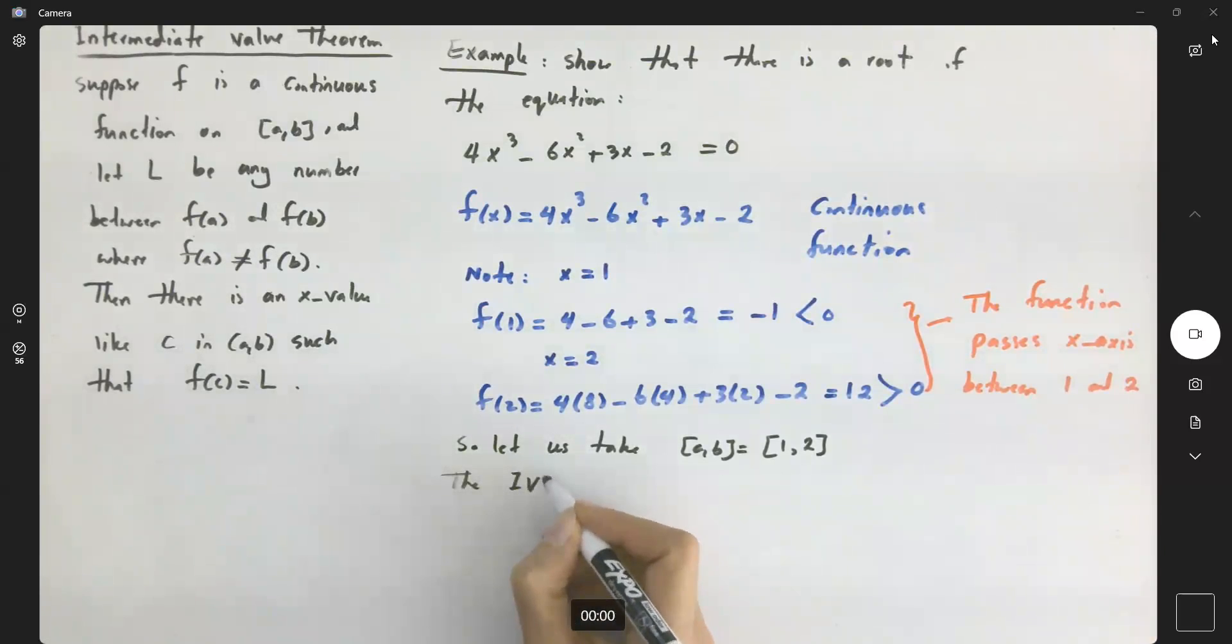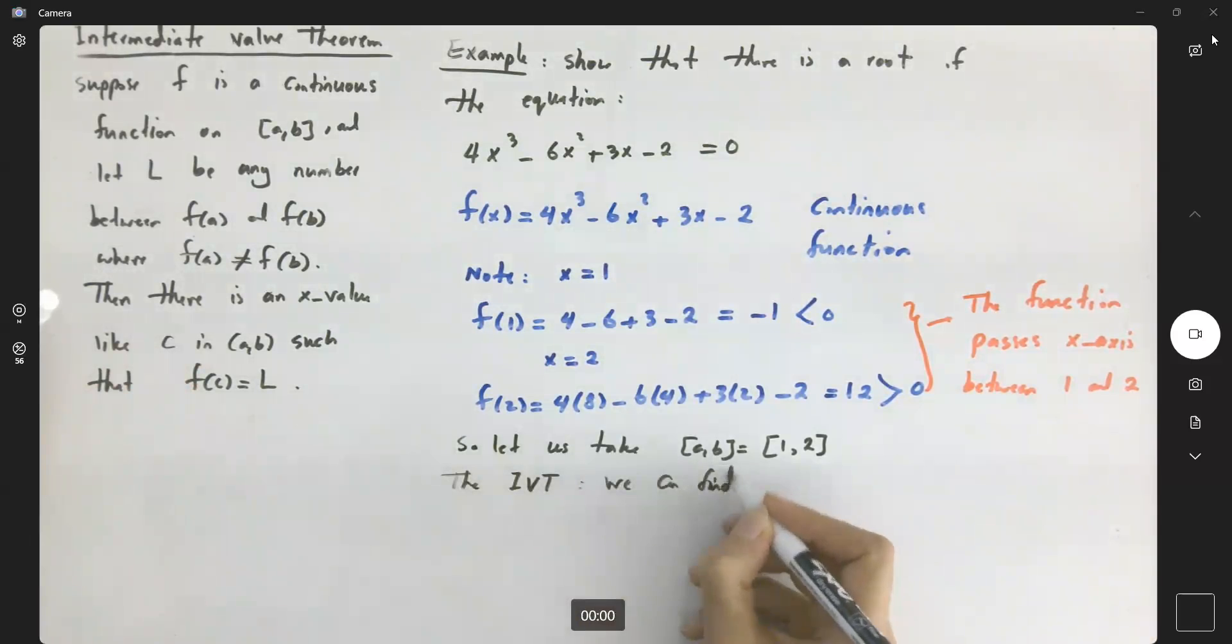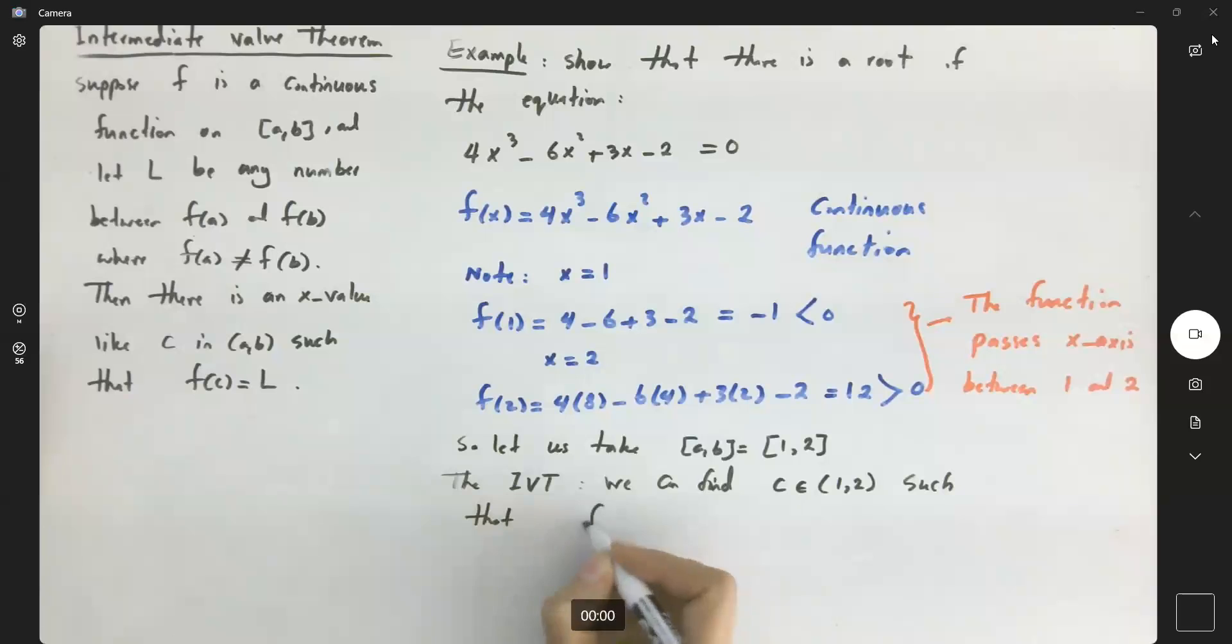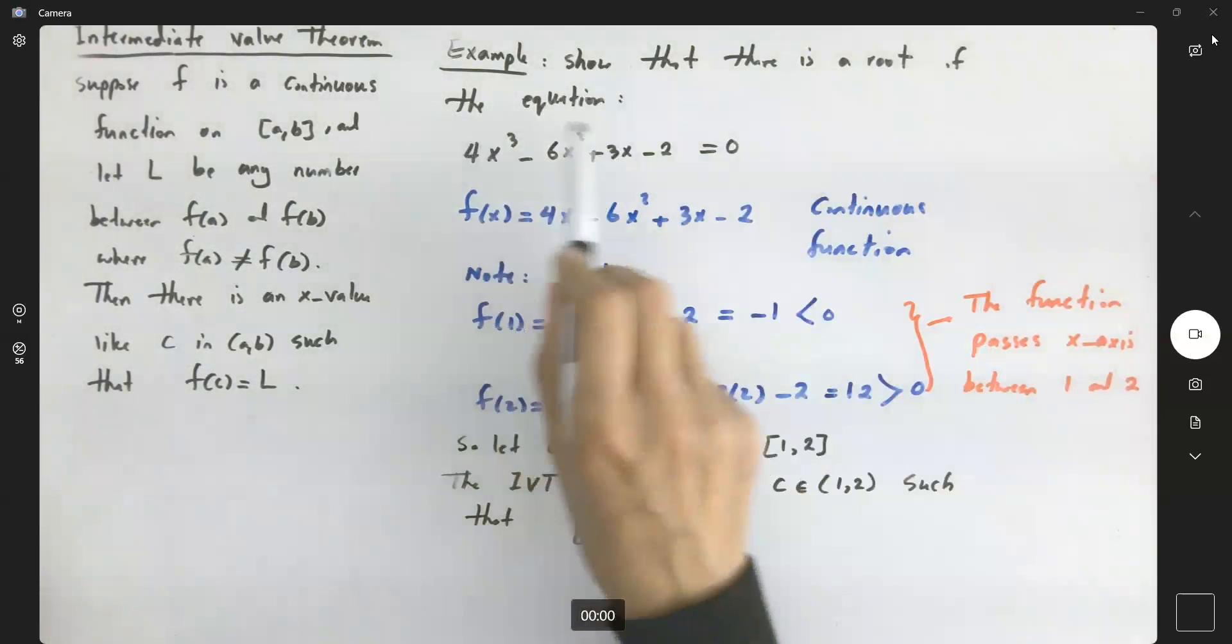The Intermediate Value Theorem assures us we can find an x-value like c in the open interval (1, 2) such that f(c) equals 0. So we just showed that there is a root for the following equation.